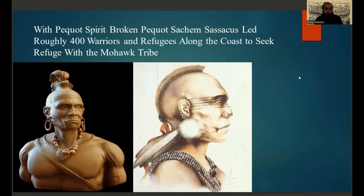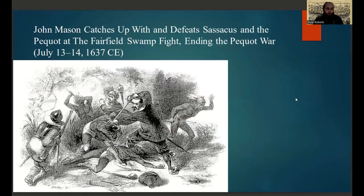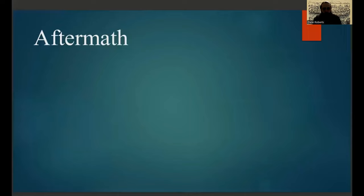After this victory at Mystic Fort, the Pequot had their spirit broken, and their most influential sachem, Sassacus, led the roughly 400 remaining warriors and refugees along the coast to seek refuge with the Mohawk tribe to the northwest — but only for John Mason to catch up with them and defeat Sassacus and his Pequot warriors at the Fairfield Swamp, in an event that became known as the Fairfield Swamp Fight, officially ending the Pequot War.